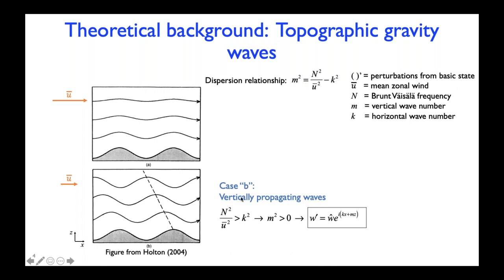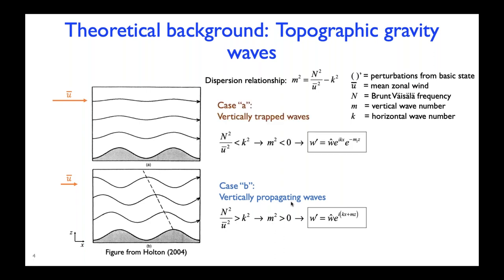These properties determine the tilt of the wave's phase lines, determined by the values of K and M. In the case of figure B, we assume that the U wind is small, such that N-squared over U-squared is greater than K-squared, which from the dispersion relation gives M-squared positive. This means the solution is wave-like in the vertical and that we have vertically propagating waves. In figure A, we assume that U wind is strong, such that N-squared over U-squared is less than K-squared, giving M-squared negative, meaning the solution in the vertical decays exponentially — the waves are vertically trapped.